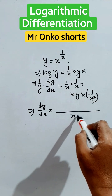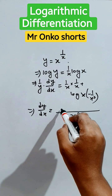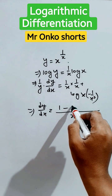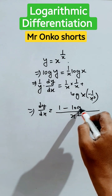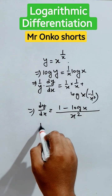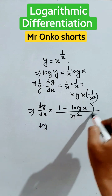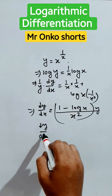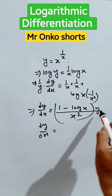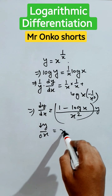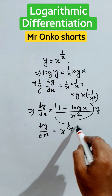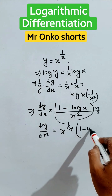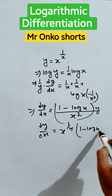It becomes 1 by x squared into 1 minus log x, then multiplied by y. So dy/dx equals y, which is x to the power 1 by x, into 1 minus log x divided by x squared.